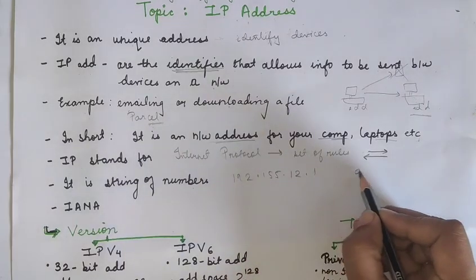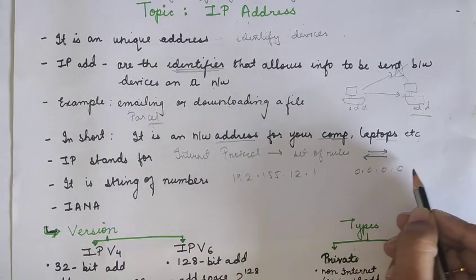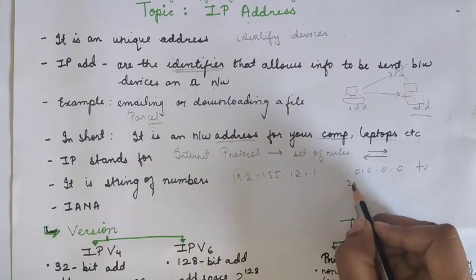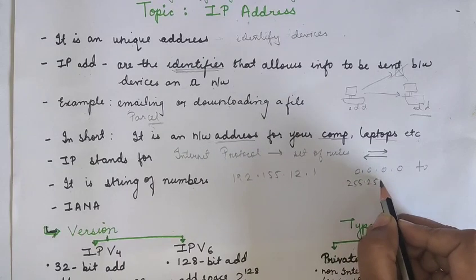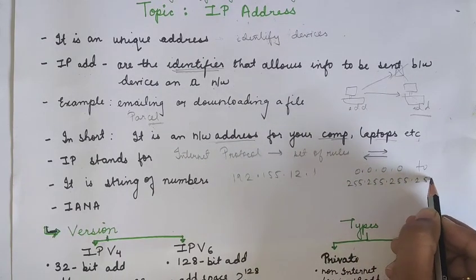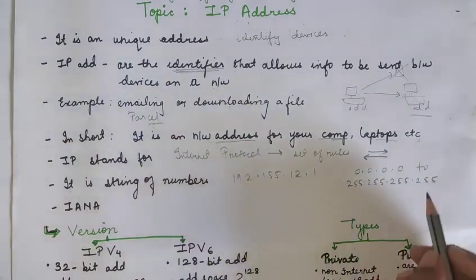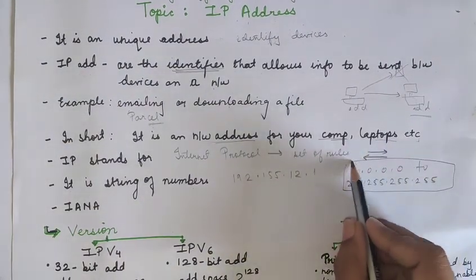It ranges actually from 0.0.0.0 to 255.255.255.255. It is the range for the IP address.